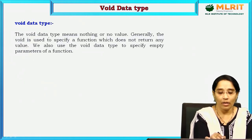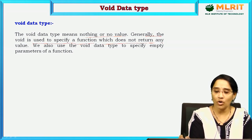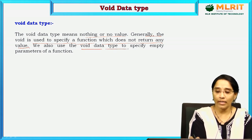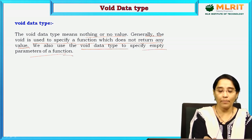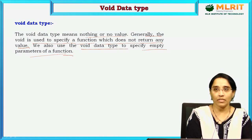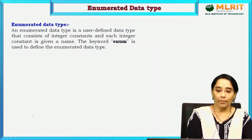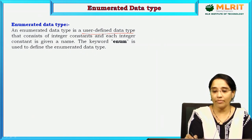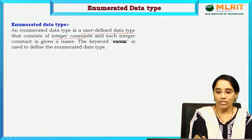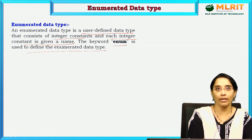Void data type means nothing or no value. Generally, void is used to specify a function which does not return any value. We also use void to specify empty parameters of a function — if you want nothing to be returned in your program, you can use the void data type. Enumerated data type is a user-defined data type that consists of integer constants, each given a name. The keyword enum is used to define the enumerated data type.